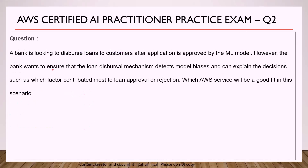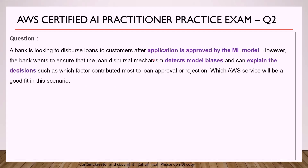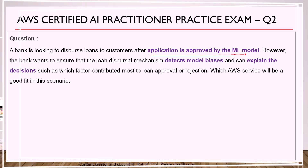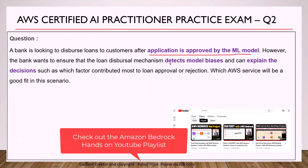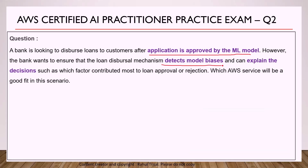The second question: a bank is looking to disperse loans to customers after an application is approved by an ML model. However, the bank wants to ensure that the loan dispersal mechanism detects model biases and can explain the decisions — such as which factors contributed most to loan approval or rejection. The key concepts are: application approved by an ML model, detecting model biases, and explaining the decisions.